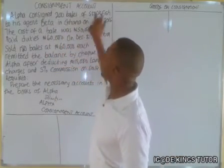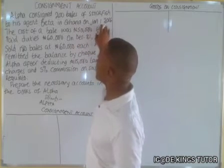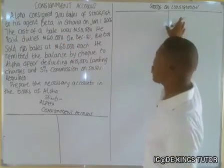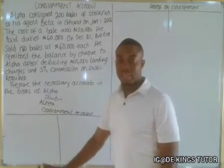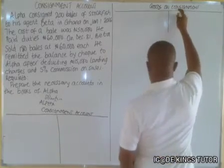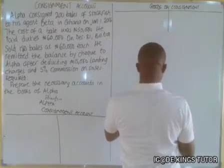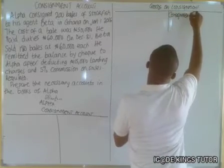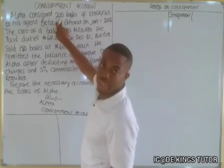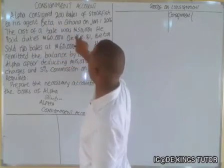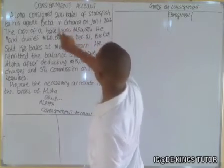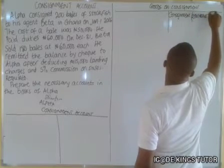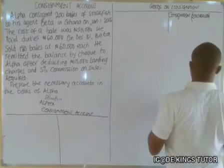He consigned 200 bales of stockfish to Beta in Ghana on January 1st, 2016. The cost of the bales was 50,000 each. When he sent the goods, you credit the goods on consignment and debit the consignment account. The quantity is 200 and the cost per bale is 50,000, so 200 times 50,000 gives us 10,000,000.